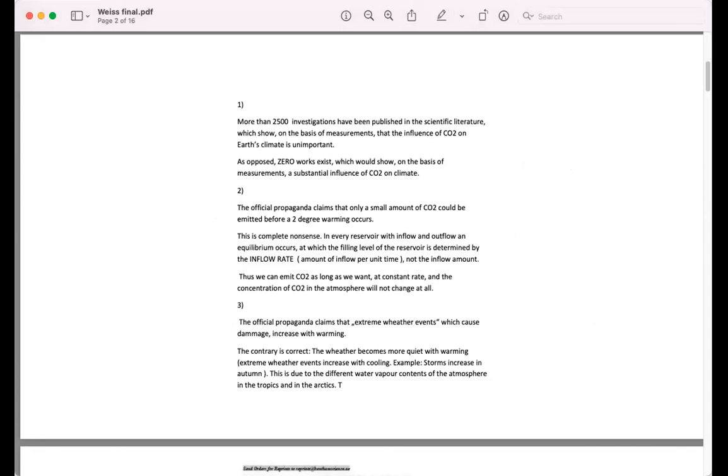The first thing is, if you go to the scientific literature, you find more than 2,500 investigations which have been published, and which show by measurements that the influence of CO2 on Earth's climate is unimportant. As opposed, zero works exist which could show on the basis of measurements a substantial influence of CO2 on climate.